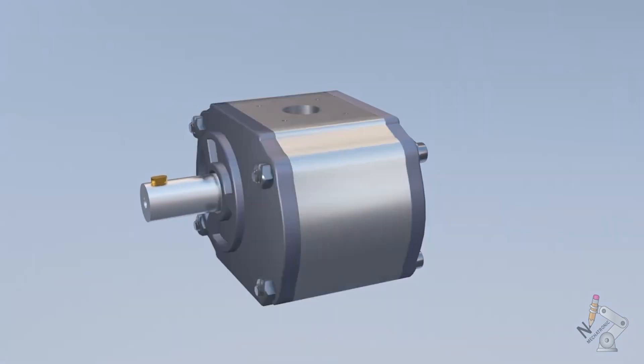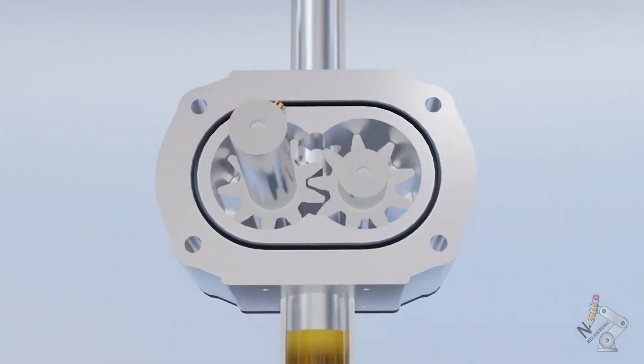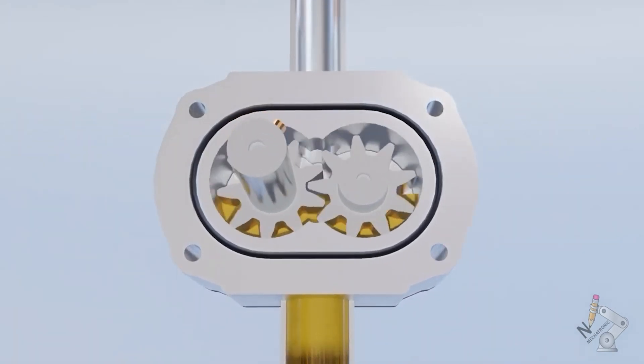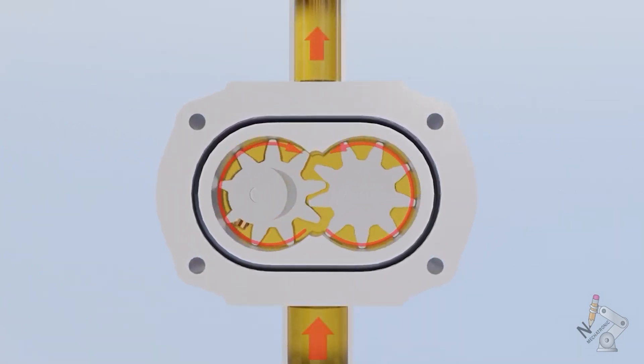The operation of this pump is as follows. The fluid enters through the inlet hole and is transported between the chambers that form the teeth in the housing wall. When the teeth come into contact with each other again, the fluid is forced out through the outlet hole.